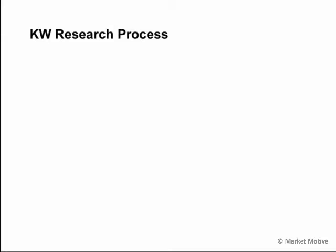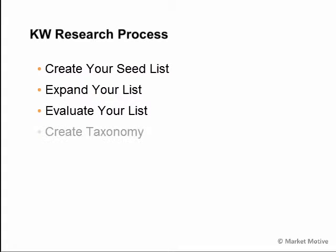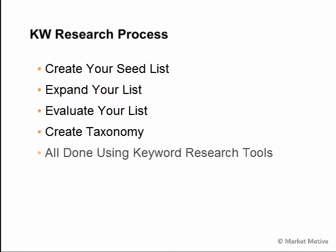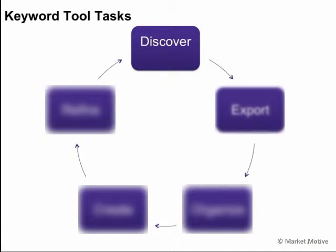The keyword research process is fairly straightforward. We're going to create a seed list, expand that list, evaluate that list, and ultimately create an information architecture or taxonomy with keywords related to different pages. Each of these tools is going to do a slightly different task. Some are going to help you discover those keywords, some are going to help you expand them, and then you'll export those to a spreadsheet and organize those into taxonomies or buckets.